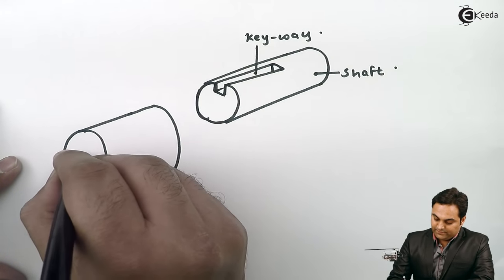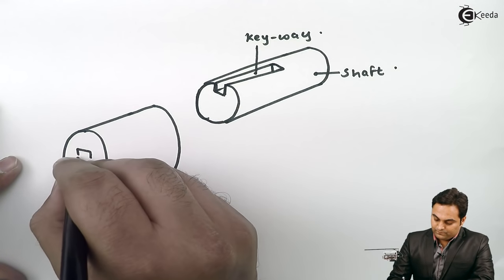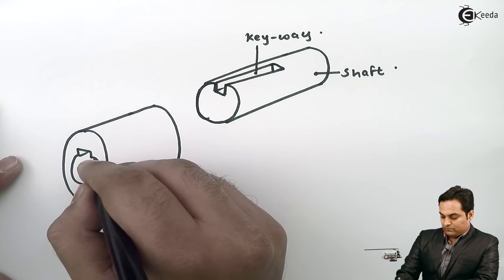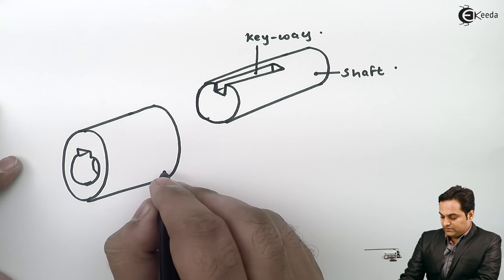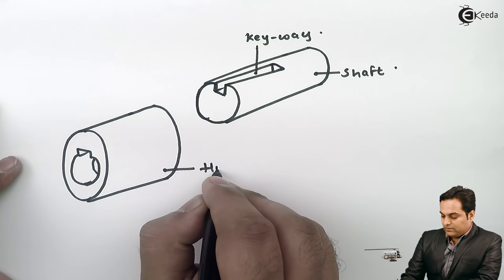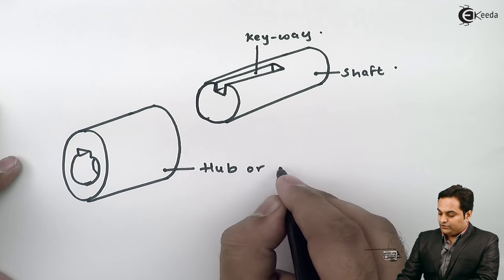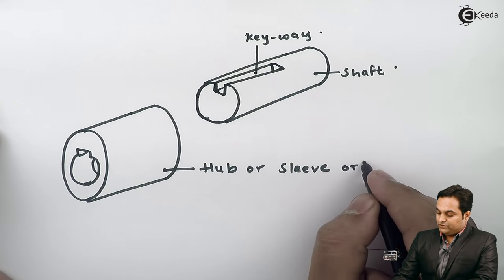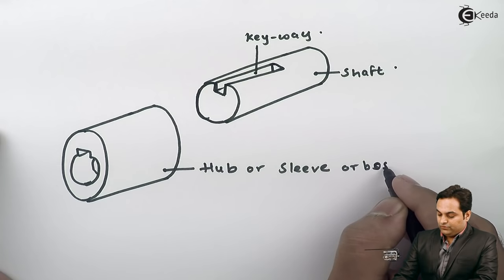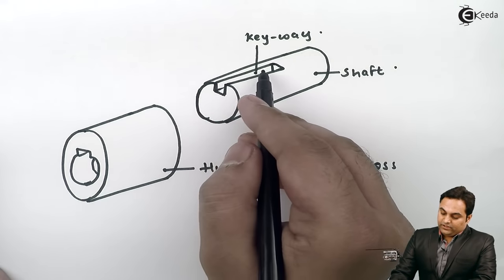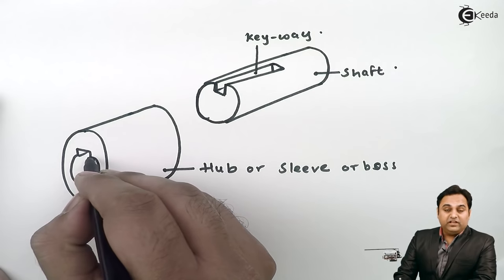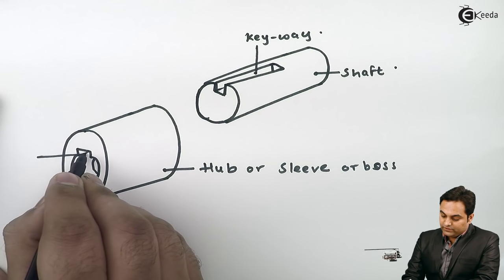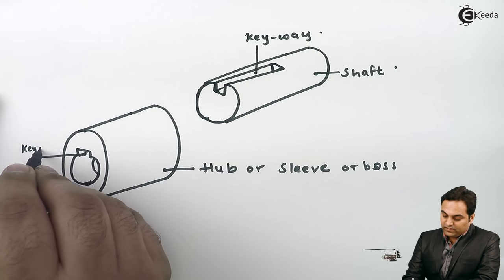In the shaft, some groove is made — this groove is called a keyway. Here I am drawing another member which would be called a hub. This is either called a hub, or it is called a sleeve, or it is also called a boss. A similar keyway is also present in this boss.